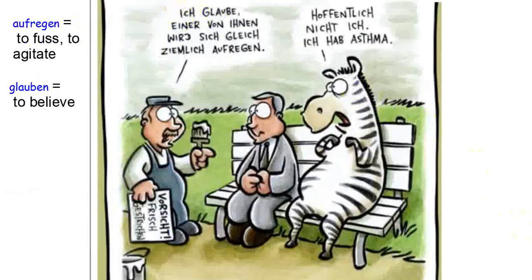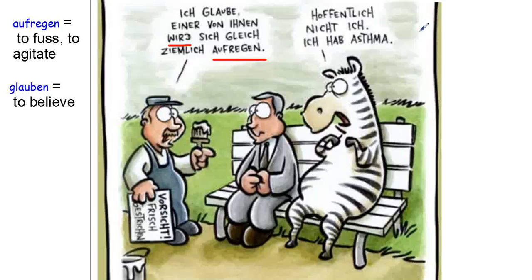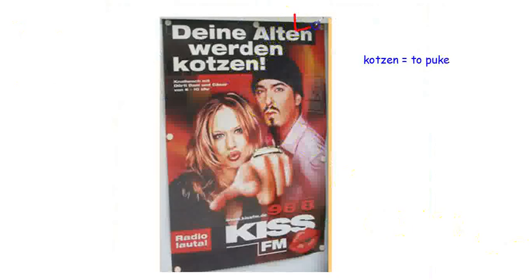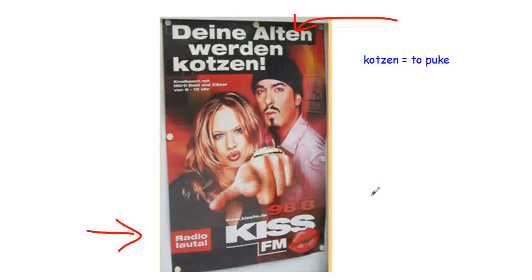Here are some real examples. 'Ich glaube, einer von ihnen wird sich gleich ziemlich aufregen — und hoffentlich nicht ich, ich hab Asthma' means 'I believe one of you will get agitated right away — hopefully not me, I have asthma' (a zebra speaking about freshly painted stripes). Another example: 'Die Alten werden kotzen' — from a radio ad targeting teens, meaning 'the elderly will puke' — they won't like this, we're too cool.